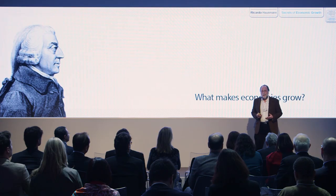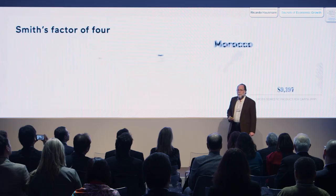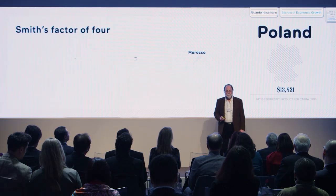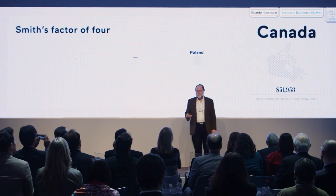Today, the poorest country in the world is probably Malawi. If I multiply by four the income per capita of Malawi to get to the same distance between the Netherlands and the poorest, I get now barely to Haiti. If I multiply by four Haiti's income, I get to Morocco. If I multiply by four Morocco's income, I get to Poland. And if I multiply by four Poland's income, I get to Canada. So today, the richest countries in the world are about 250 times richer than the poorest countries in the world.